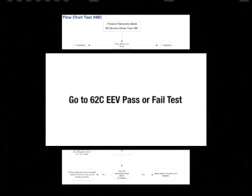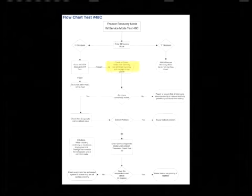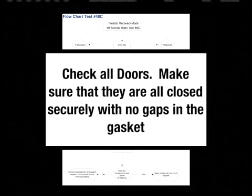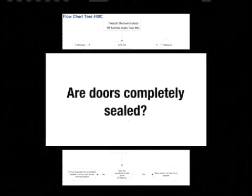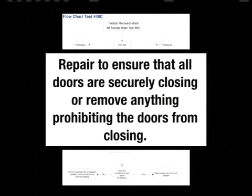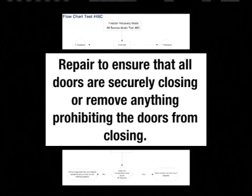If Test 49C does not check out, go to Test 62C. If Test 49C checks out okay, start checking all doors. Make sure they are all closed securely with no gaps in the gasket. If the doors are not sealed, repair all doors to ensure that they are closing securely or remove anything prohibiting the door from closing.